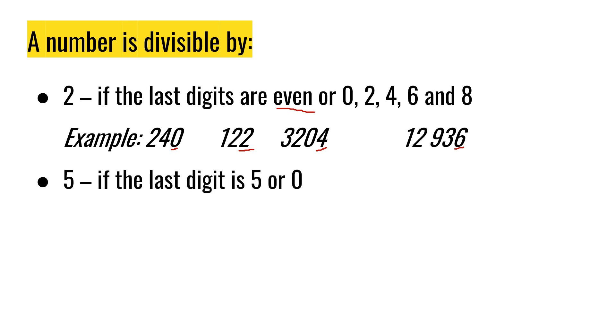Next, 5. If the last digit is 5 or 0, kung ang huling number ay nagtatapos sa 5 or 0. Example: 505, last digit is 5, so 505 is divisible by 5. 1,000, the last digit is 0, so meaning divisible by 5.